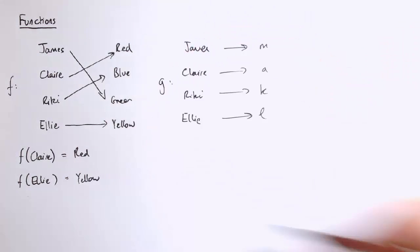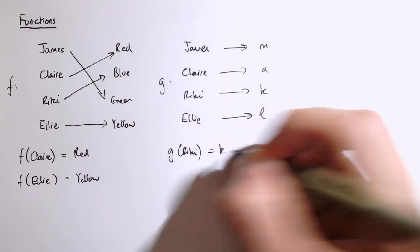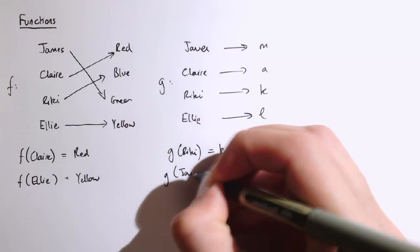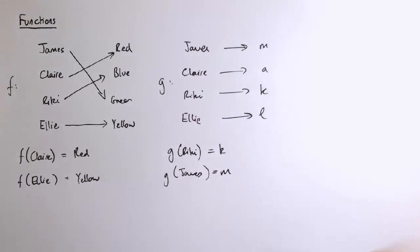So if I called this function g, we would have g of Ricky equals k, g of James is equal to m. No particular reason to use g here, it's just a letter to denote that particular function. So the third letter of James is m and the third letter of Ricky is k.